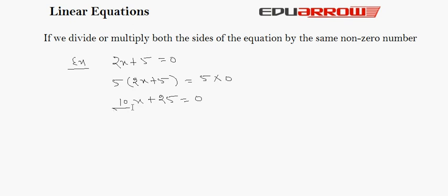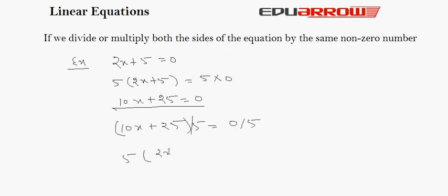Now, taking the same equation, if we divide both sides by 5, that is 10x plus 25 divided by 5 is equal to 0 divided by 5, this will equal 2x plus 5 is equal to 0. So we can see the equation is not affected whether we multiply or divide both sides by the same number.